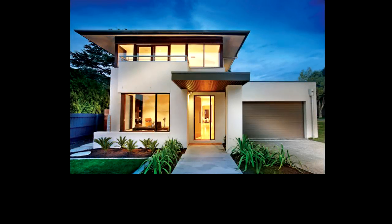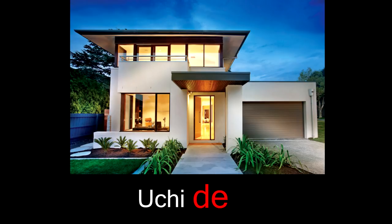One word we learned last week was uchi. Uchi can be a house, an apartment, or even a cardboard box. If we mark this with de, it means that our house is where whatever verb we're talking about is happening or has happened — it could be eating, sleeping, or watching TV. We haven't really learned any verbs yet, but we will.